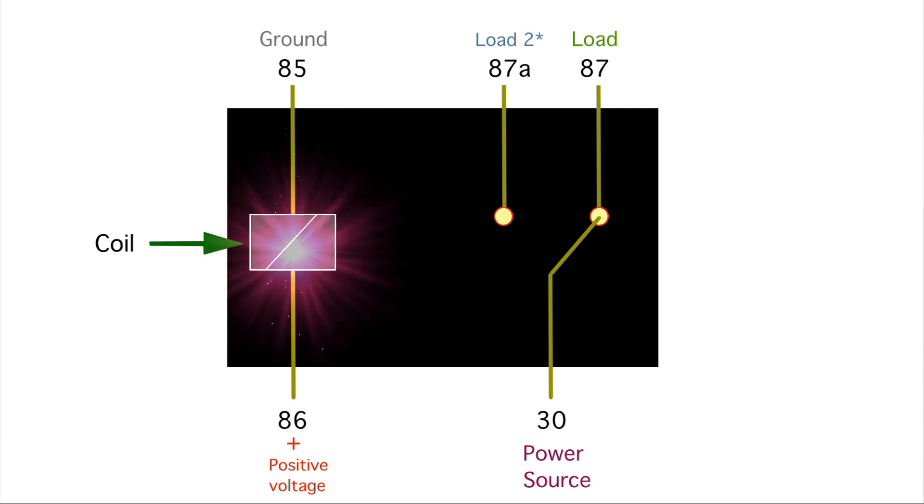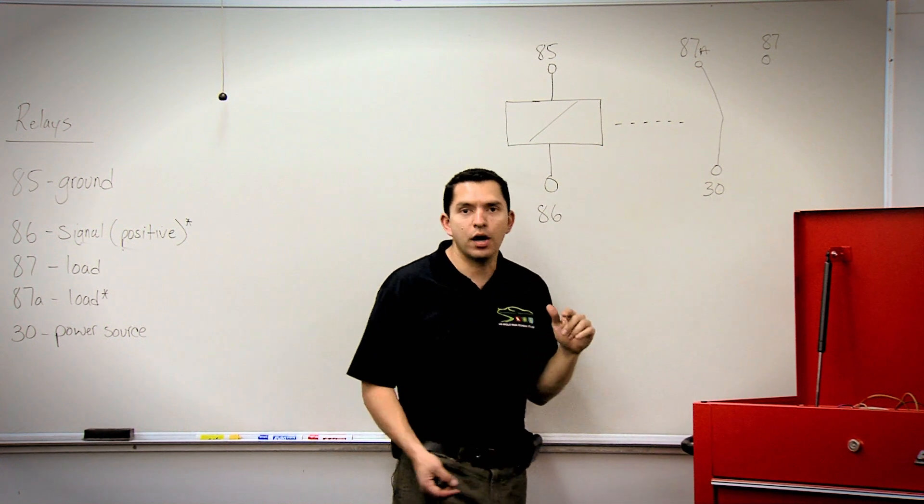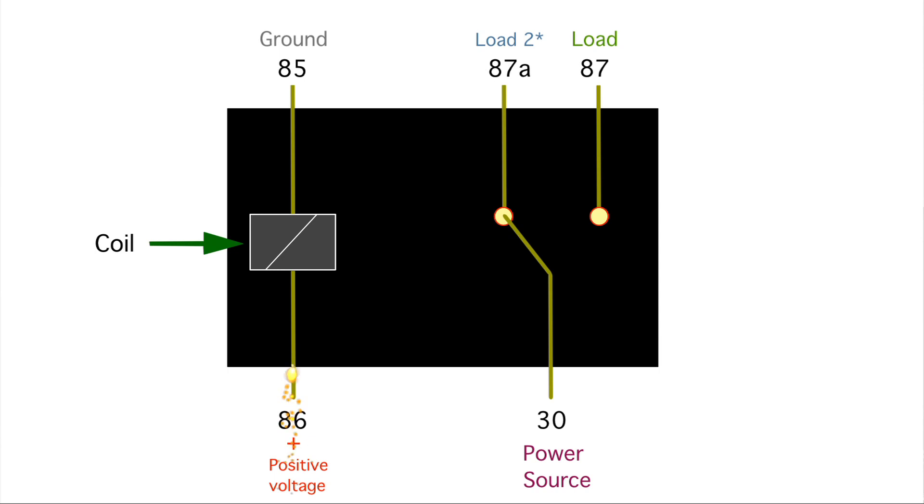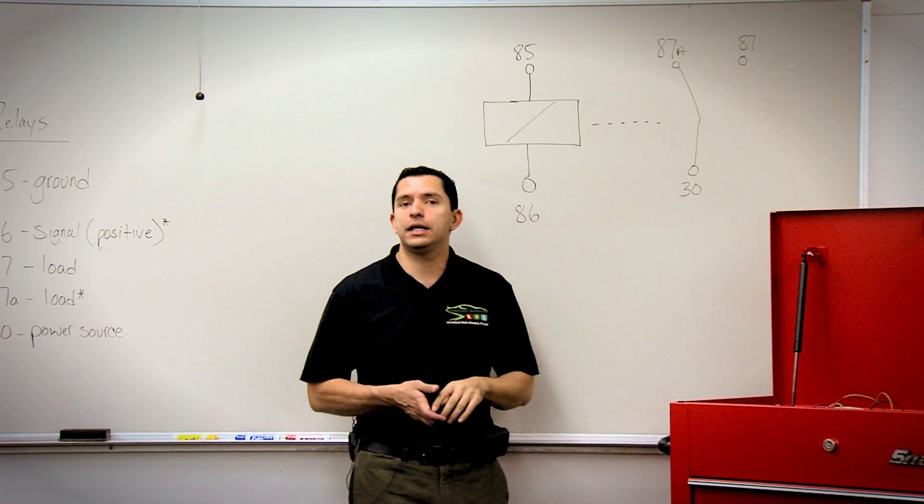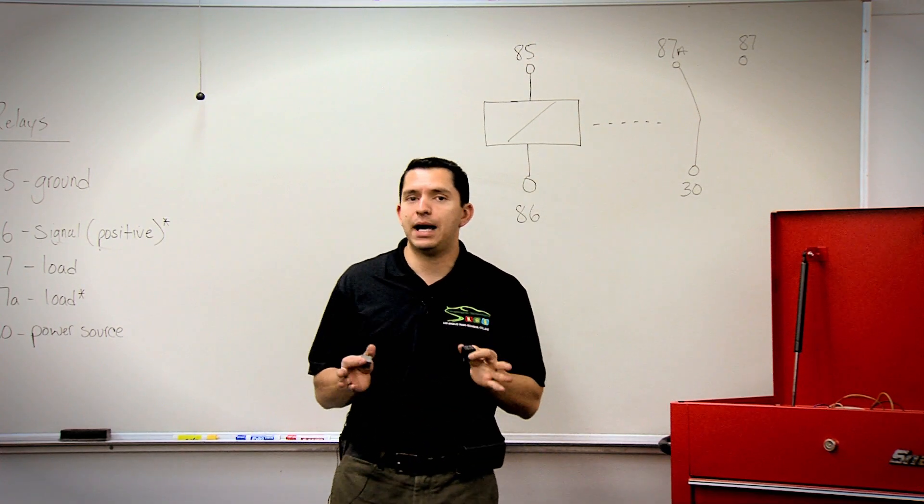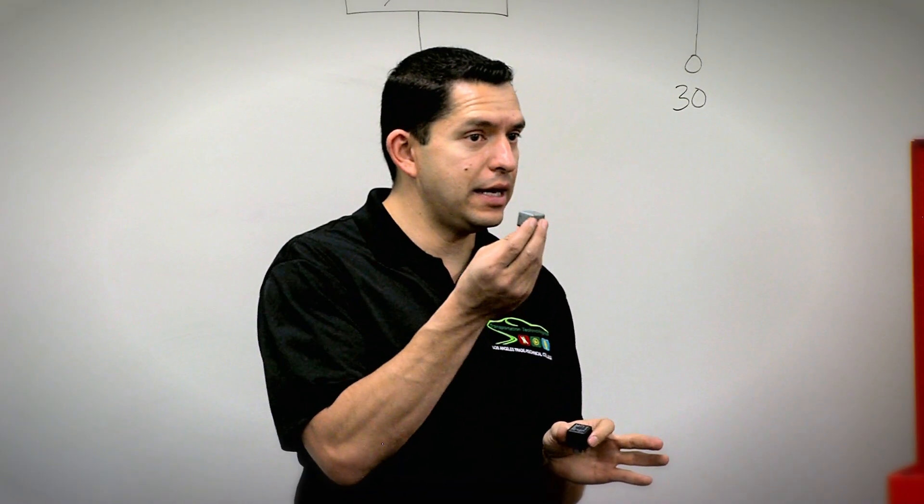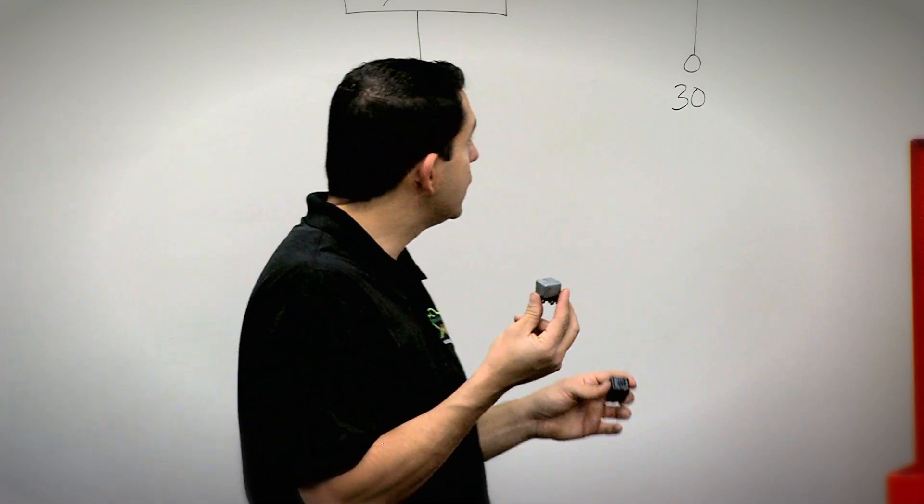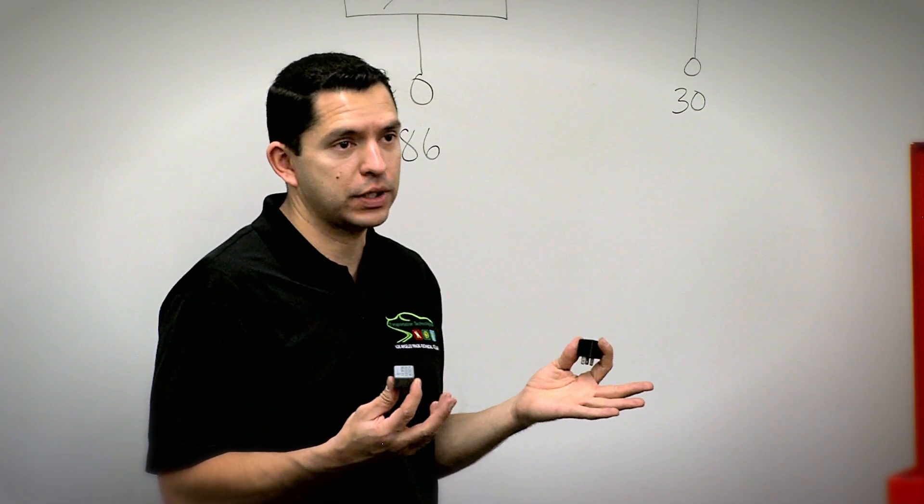A question that may come up is, according to the way this schematic is drawn, it almost seems that when we power up the relay it would push the contact over to 87. But remember, a schematic is not a direct representation of how things mechanically or physically move. It's intended to show us how it works from an electrical standpoint.